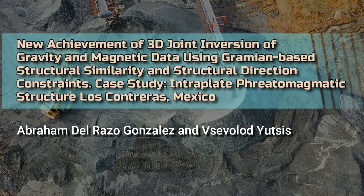New Achievement of 3D Joint Inversion of Gravity and Magnetic Data Using Gramian-Based Structural Similarity and Structural Direction Constraints. Case Study: Intraplate Phreatomagmatic Structure Los Contreras, Mexico. By Abraham Del Rajo Gonzalez and Vsevolod Yatsis.